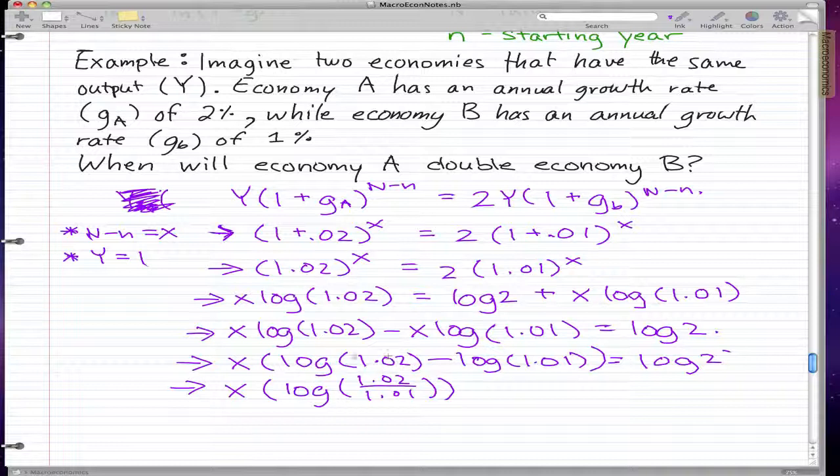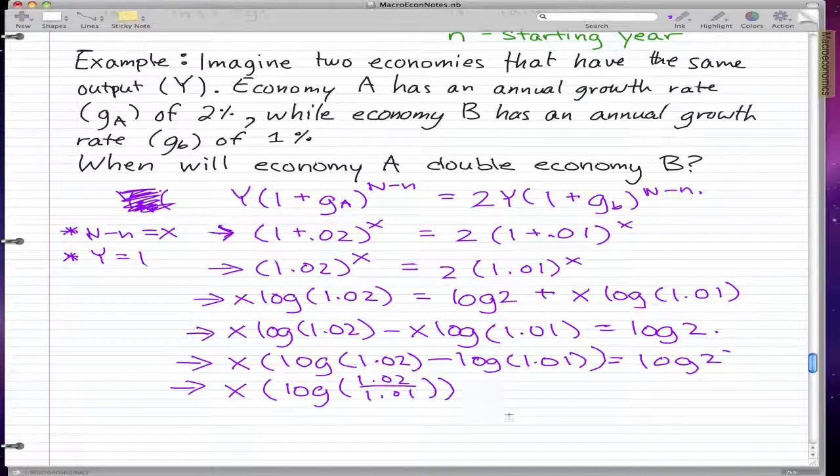And we have X log 1.02 divided by 1.01. This is a rule of logarithms that if we have log A minus log B, that's equal to log A over B.